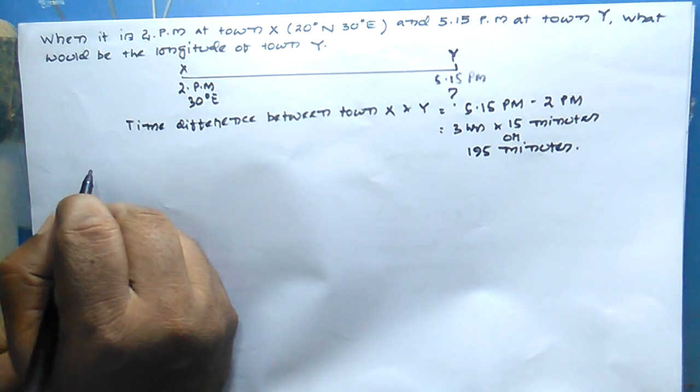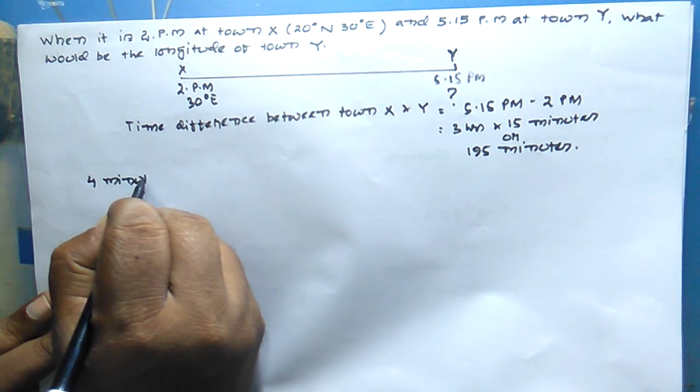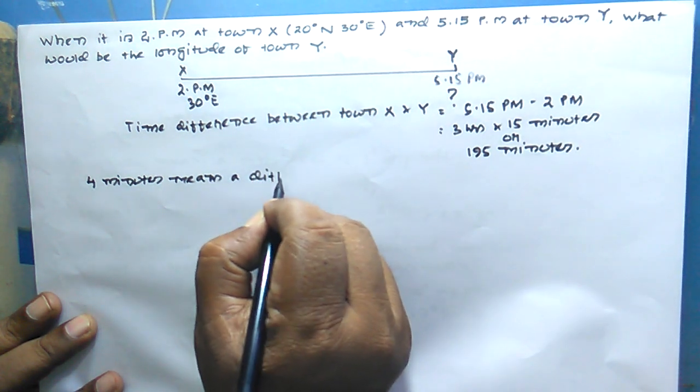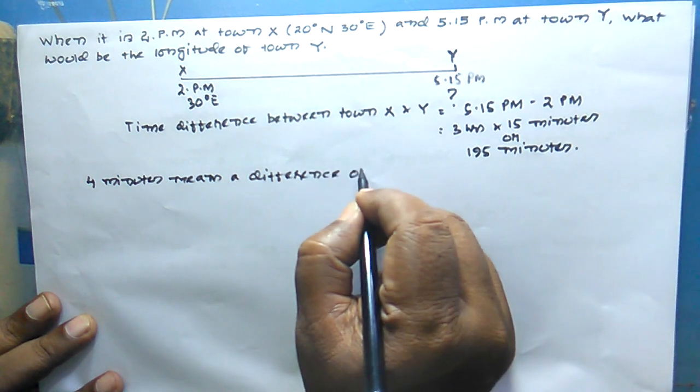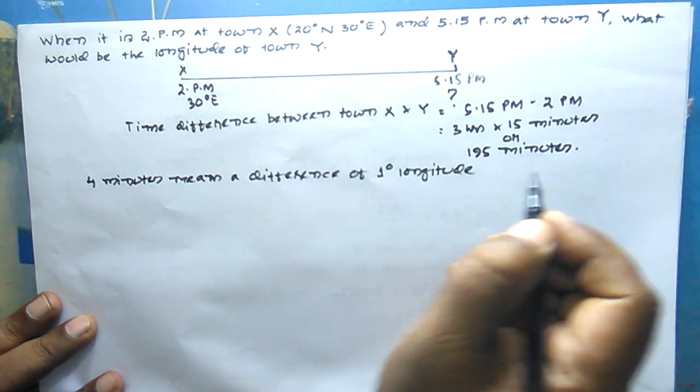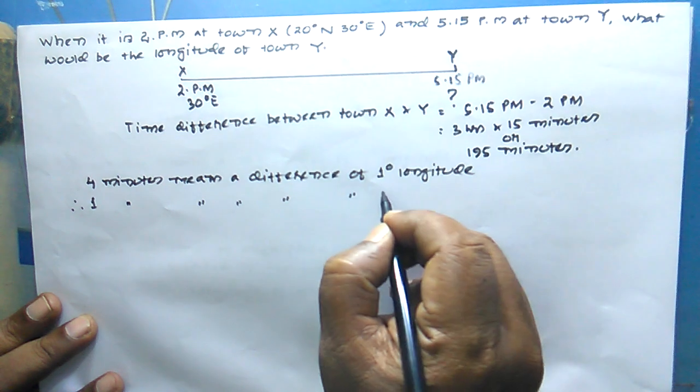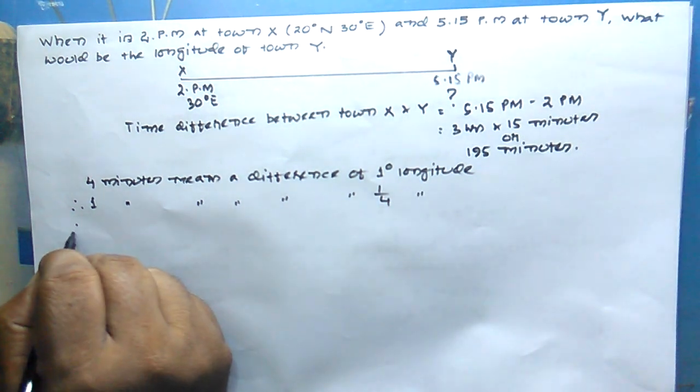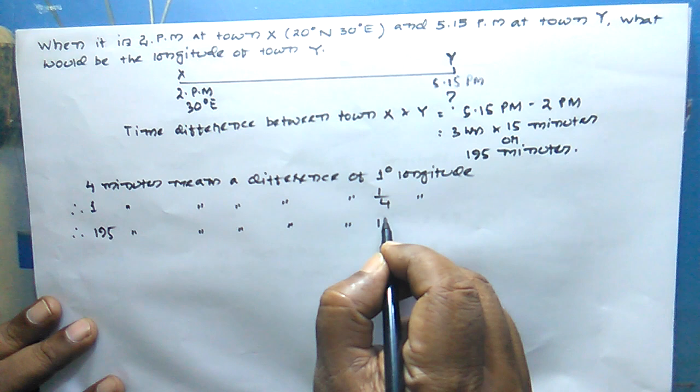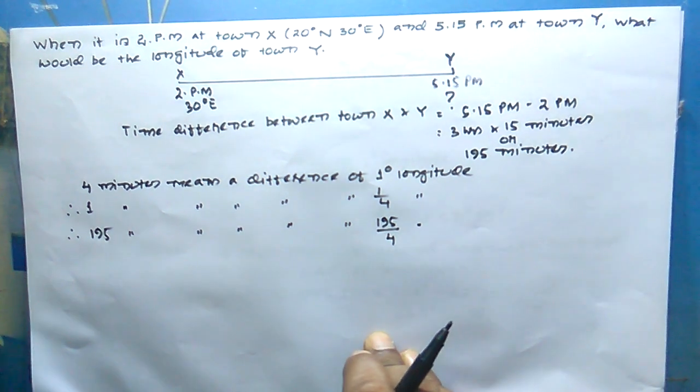Now we write the statement: 4 minutes means a difference of 1 degree longitude. Therefore, 1 minute means a difference of 1 by 4 longitude, and 195 minutes means a difference of 195 by 4 longitude.